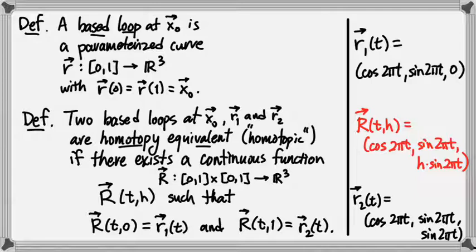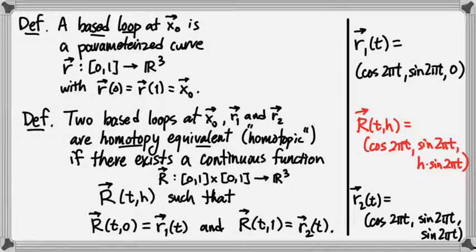Ultimately what we want in our knot group is to consider only homotopy equivalence classes of loops. We don't want the knot group to distinguish between loops like r1 and r2 — we only care about how many times they wind around the arcs of a knot diagram. Homotopy is our tool for making those distinctions invisible, so two loops are only different if they do fundamentally different things when winding around the knot complement.